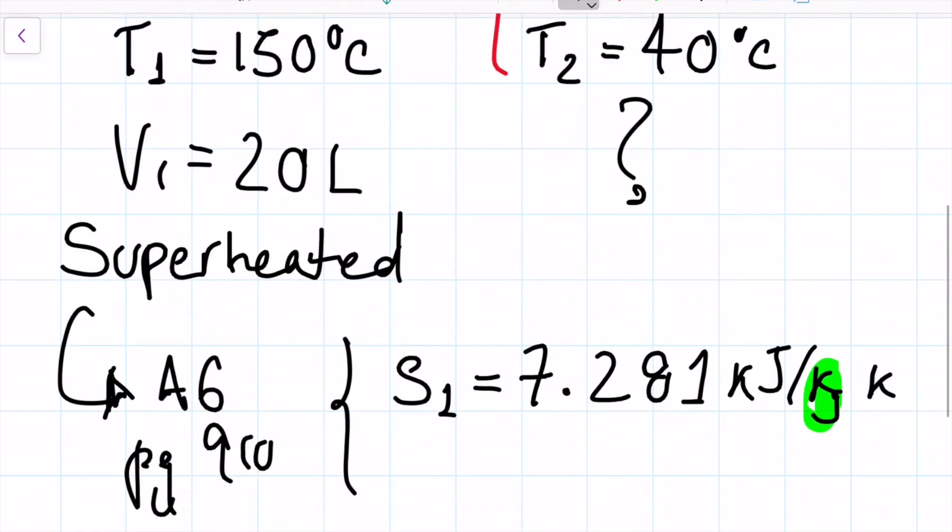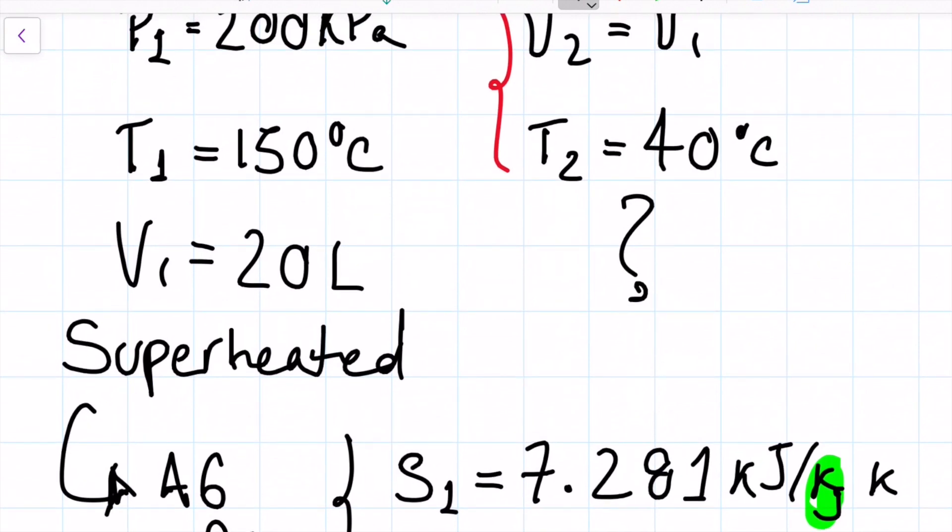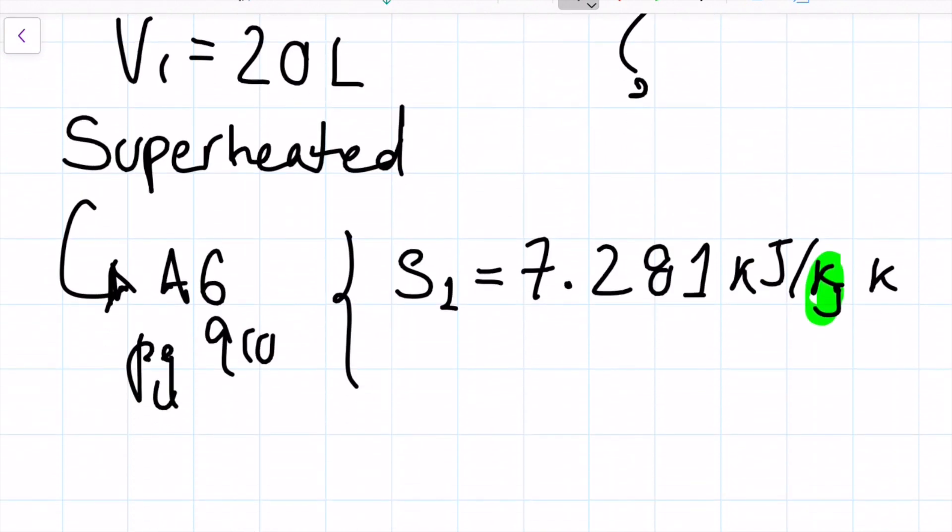And since I have my volume and if I can grab my specific volume you can find the mass, right? So in this table still I can go ahead and grab my specific volume one, which is 0.95986, and that's going to be in meters cubed per kilograms.